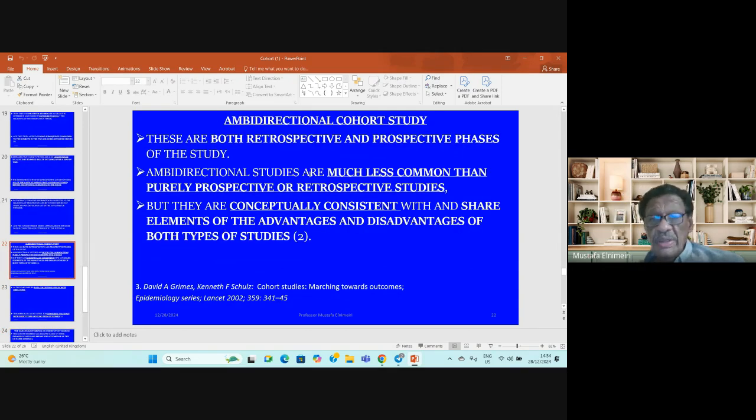Ambidirectional cohort study design is the third category of cohort studies. These studies have both retrospective and prospective phases. Ambidirectional studies are much less common than purely prospective or retrospective cohort studies, but they share elements of advantages and disadvantages of both types.